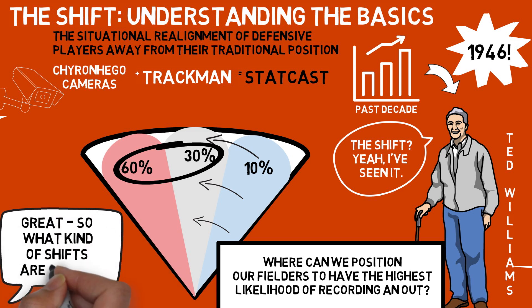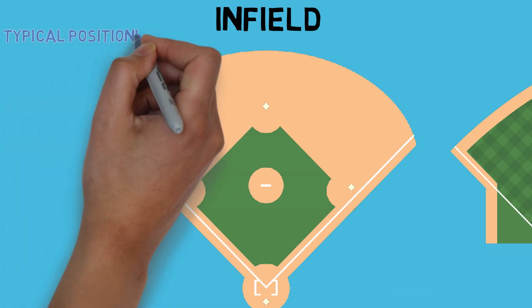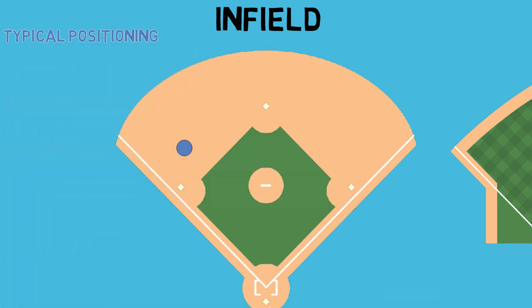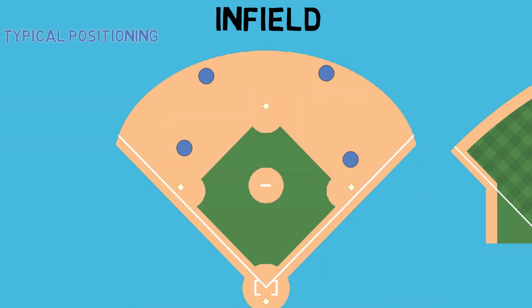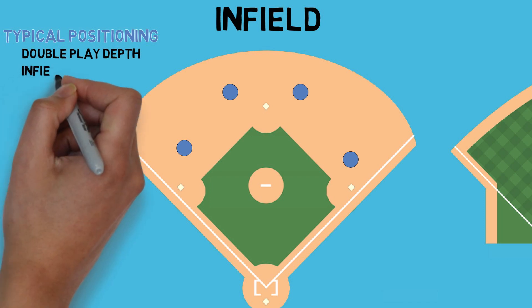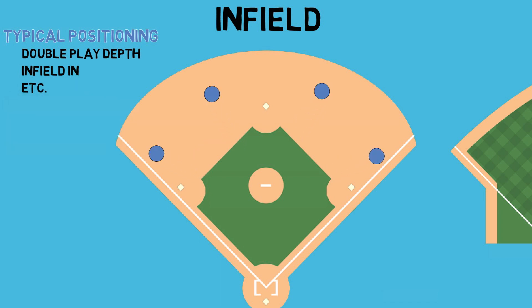What do the different types of shifts actually look like? We'll break it down into infield positioning shifts and outfield positioning shifts, starting with your typically positioned infield. The first is double play depth, where your two middle infielders pinch the middle in order to increase their chances of reaching the bag in time to turn a double play. This is not considered a shift. There is a border that must be crossed for positioning to be considered a shift — the same applies to infield in, or corner infielders shading towards the line to eliminate doubles.